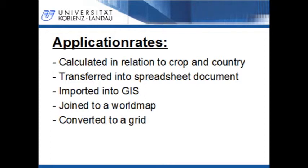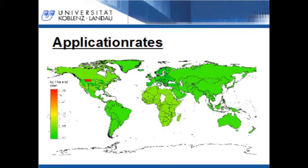In the next step, a grid with the spatial distribution of the application rates was created. First, annual application rates in relation to the crop and country were calculated. These application rates were transferred into a spreadsheet document and exported as a DBF database file. Then the DBF file was imported into a GIS and joined to a world map. In the last step, the world map with the joined application rates was converted into a grid. In this slide, you can see the application rate grid for wheat. Data on application rates were not available for all countries; for those countries, the application rates were calculated by averaging available rates. Red areas represent high application rates and green areas represent low application rates.